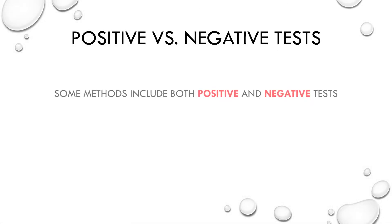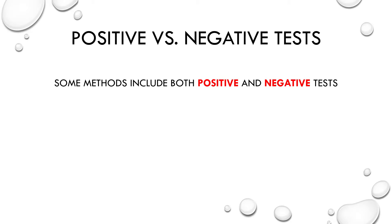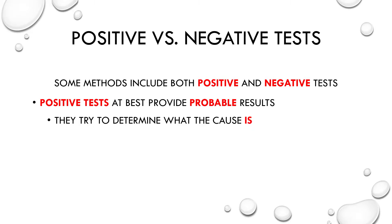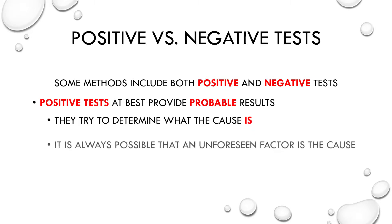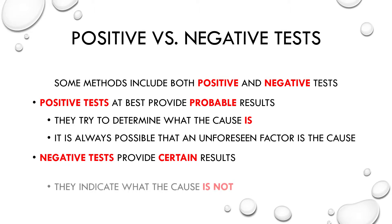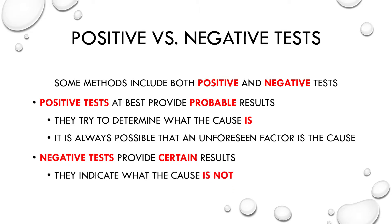Some of these methods include both positive and negative tests. Positive tests, at best, provide probable results. They try to determine what the cause is, but it's always possible that some unforeseen, unnoticed factor is the cause. The negative tests, on the other hand, provide virtually certain results — they indicate for sure what the cause is not, or at least attempt to do so.